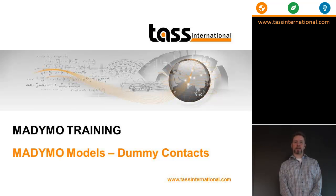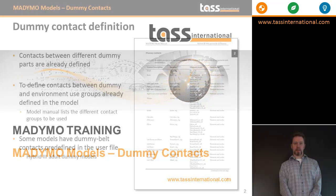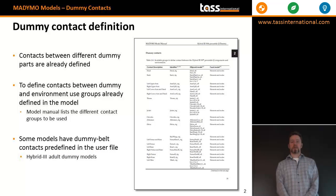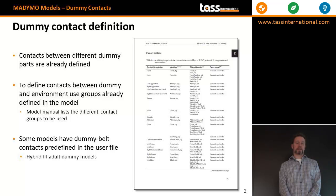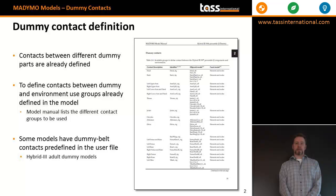This section of the training deals with defining contacts with dummy models. All dummy models already have contact parts defined for internal contact groups between, for example, the head and the chest, or the left and right legs. In addition, all of the dummy contact groups defined are listed in the model manual. These can be used for all the normal contact interactions that a dummy will undergo.